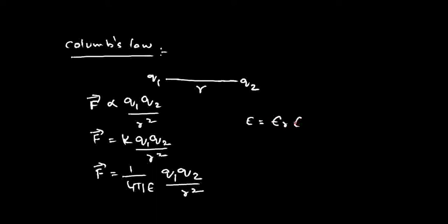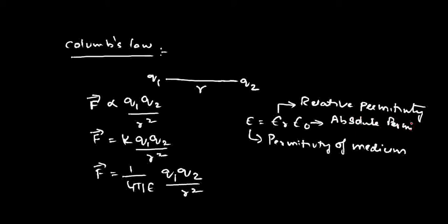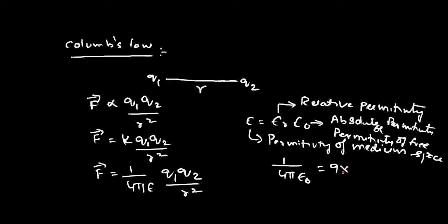Experimentally, it is found that K equals 1 by 4πε, so F = (1/4πε) Q1 Q2 / R², where ε equals εr times ε₀. Epsilon ε is called the permittivity of the medium. εr is called the relative permittivity of the medium. ε₀ is the absolute permittivity, sometimes referred to as permittivity of free space. The value of 1 by 4πε₀ is equal to 9 × 10⁹.